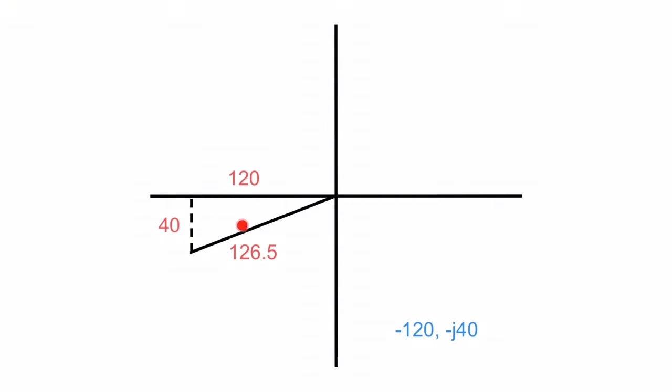Now we just need to figure out what this angle is. Using cos, I'll go 120 divided by 126.5 and inverse cos that. That gives me 18.5 degrees. I can't say it's 126.5 at 18.5 degrees, because then you'd think I'm talking about the first quadrant. Before, in the last one, we went 180 minus that angle. Now we're going to go 180 plus the 18.5. And that will give me my angle, which is 198.5.